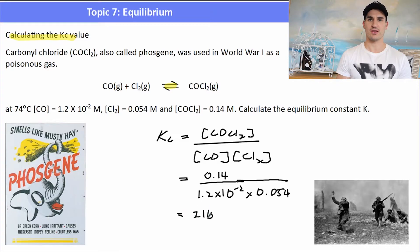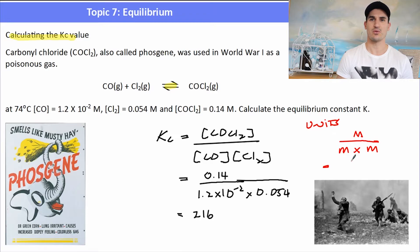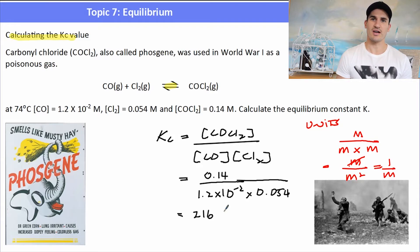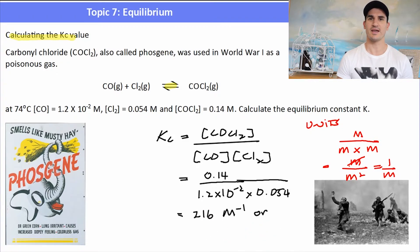We've also got to be careful with the units, because they can change. We've got molar at the top over molar times molar, so that's M over M², which simplifies to M⁻¹. Or, as the IB might like to write it, in terms of mol dm⁻³ — it'll be mol⁻¹ dm³. Those will be our units for this equilibrium constant, and they can change.